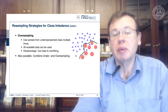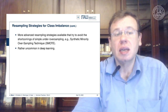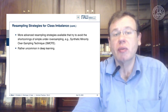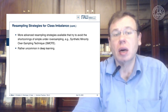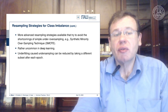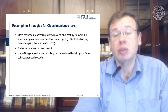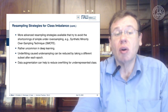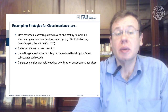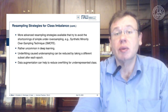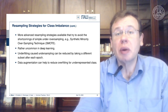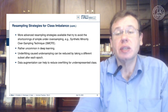Combinations of under- and oversampling are also possible, which leads to advanced resampling techniques such as Synthetic Minority Oversampling Technique (SMOTE), which tries to avoid the shortcomings of both approaches — though it is rather uncommon in deep learning. Underfitting caused by undersampling can be reduced by taking a different subset after each epoch, which is quite common. Data augmentation can also help reduce overfitting for underrepresented classes, by augmenting more of the samples that have been seen less frequently.